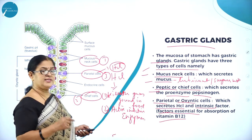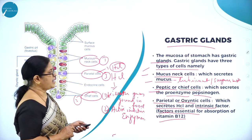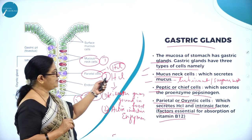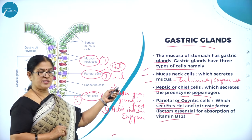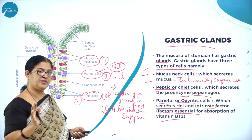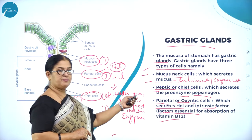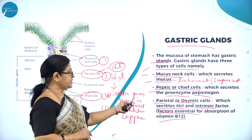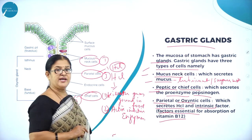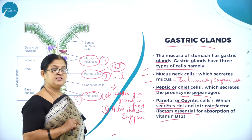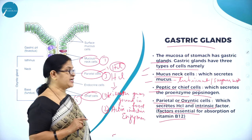Gastric glands are found on the mucosal layer of the stomach and are divided into three types of cells: mucus neck cells, which secrete mucus acting as a lubricating agent keeping the surface of the stomach moist; peptic or chief cells, which secrete the proenzyme pepsinogen; and parietal or oxyntic cells, which produce HCL that kills germs carried through food and activates inactive enzymes.